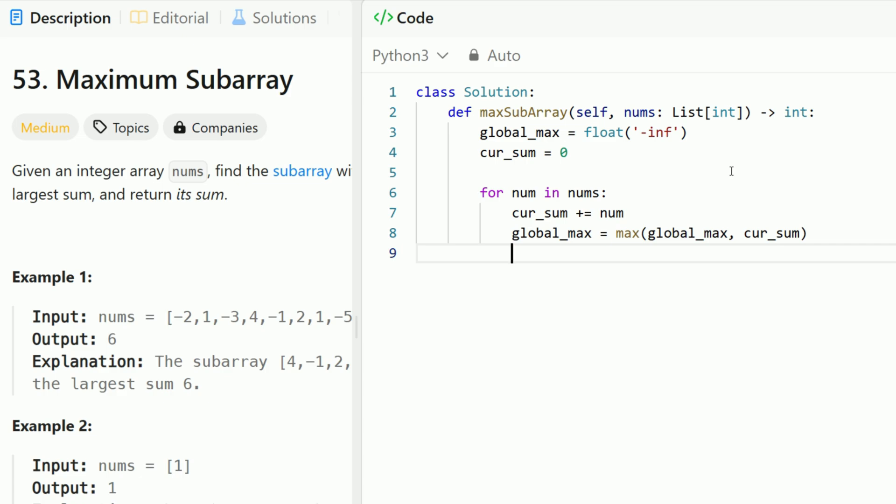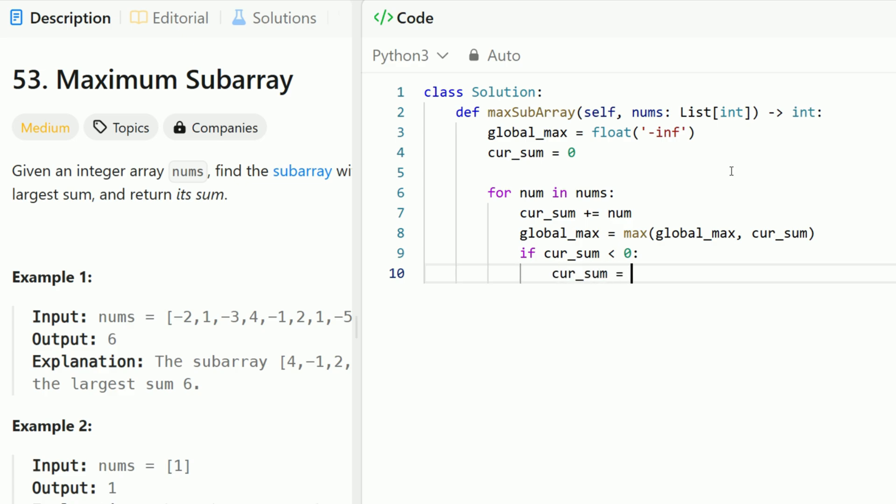And lastly, this is kind of like the greedy approach in the algorithm. If the current sum is less than 0, then we reset current sum equal to 0. So we don't let it go past into negative values because that's going to reduce the sum of the overall subarray. And now we're just going to return the global max.